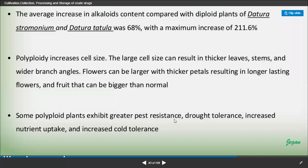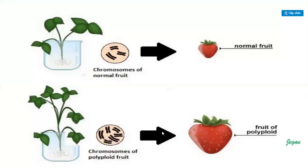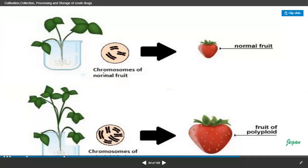Some polyploid plants exhibit greater pest resistance and drought tolerance, increased nutrient uptake, and increased cold tolerance. Cold tolerance improves, nutrient uptake increases, and even in areas with low water-holding capacity, polyploid plants survive and resist microbes, fungi, viruses, and other insects.